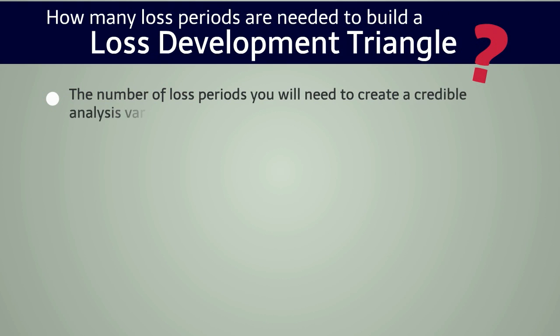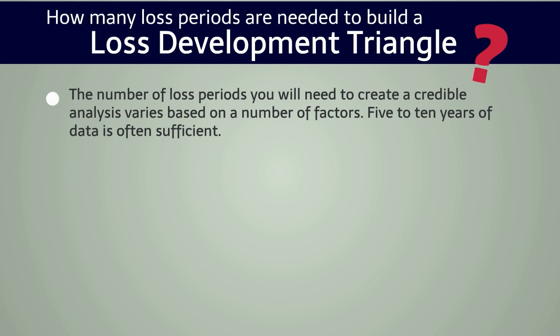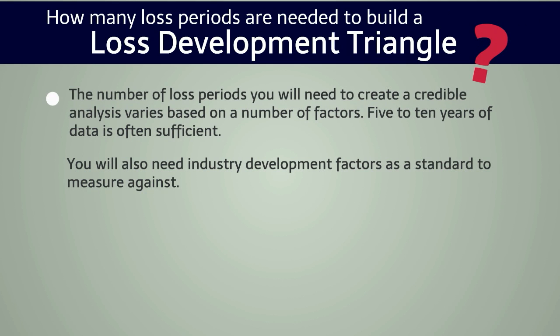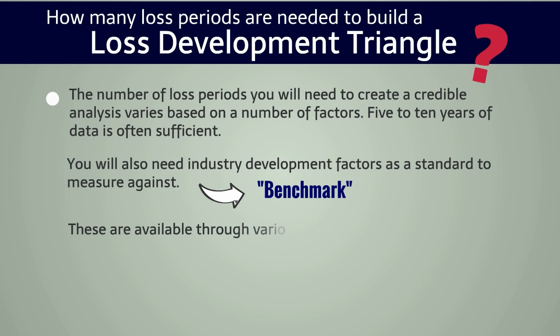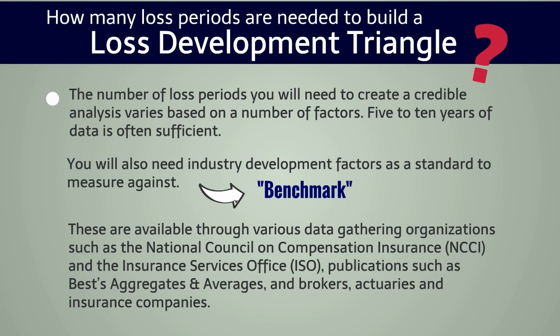The number of loss periods you will need to create a credible analysis varies based on a number of factors. Five to ten years of data is often sufficient. You will also need industry development factors as a standard to measure against — we usually call this a benchmark. These are available through various data gathering organizations such as the National Council on Compensation Insurance, usually referred to as NCCI, and the Insurance Services Office, or through publications such as Best Aggregates and Averages. You can also sometimes get this information from brokers, actuaries, and insurance companies.